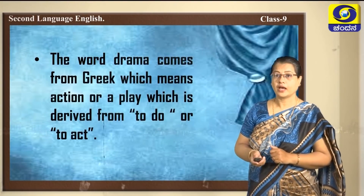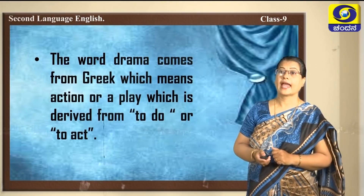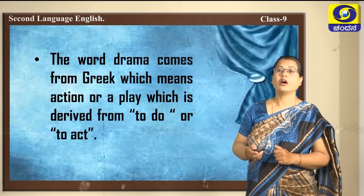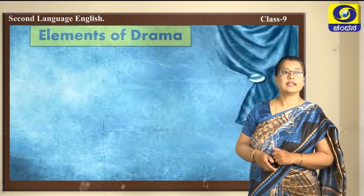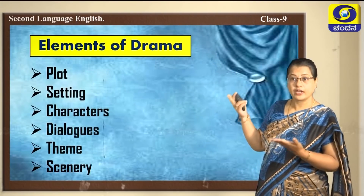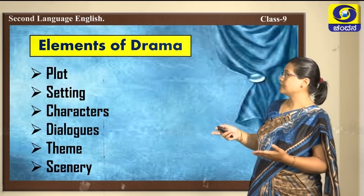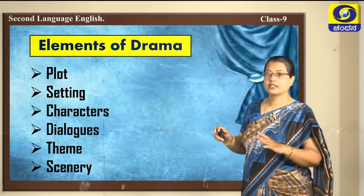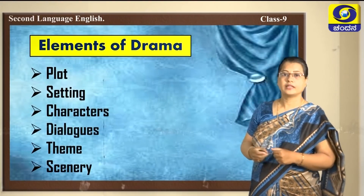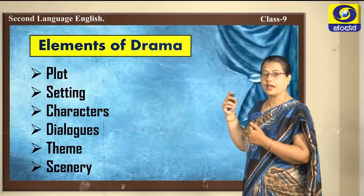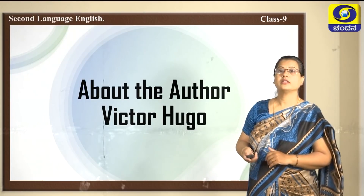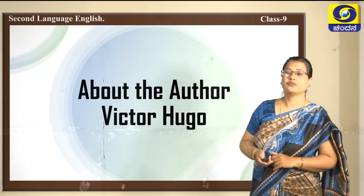Drama or a play is a form of literature in which the author tells the story through dialogues. The word drama comes from Greek, which means action or play, derived from 'to do' or 'to act.' Let us see the elements of drama: plot means the events taking place; setting is the place; characters are the people involved; dialogues are the language spoken by the characters; theme is the idea; and scenery is the background of the drama.